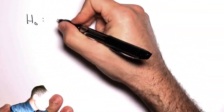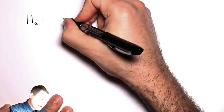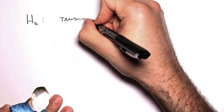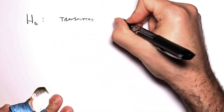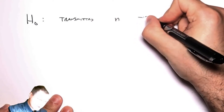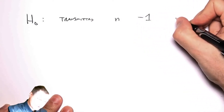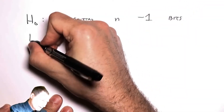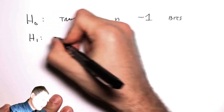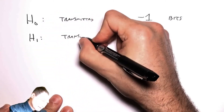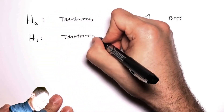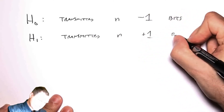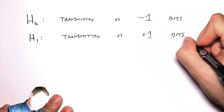So what are my hypotheses? H0 is that I transmitted n minus-one bits, and my alternate hypothesis H1 is that I transmitted n plus-one bits.